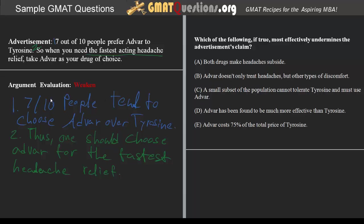In the second sentence we get the conclusion — expressed through the word 'so' — that because seven out of ten people prefer Advar to Tyrosin, one should choose Advar for the fastest headache relief. We have to note the use of the superlative 'fastest', because what it implies is that the reason seven out of ten people tend to pick Advar over Tyrosin is because Advar is faster acting — not just faster acting, but the fastest medication one can take for headache relief.